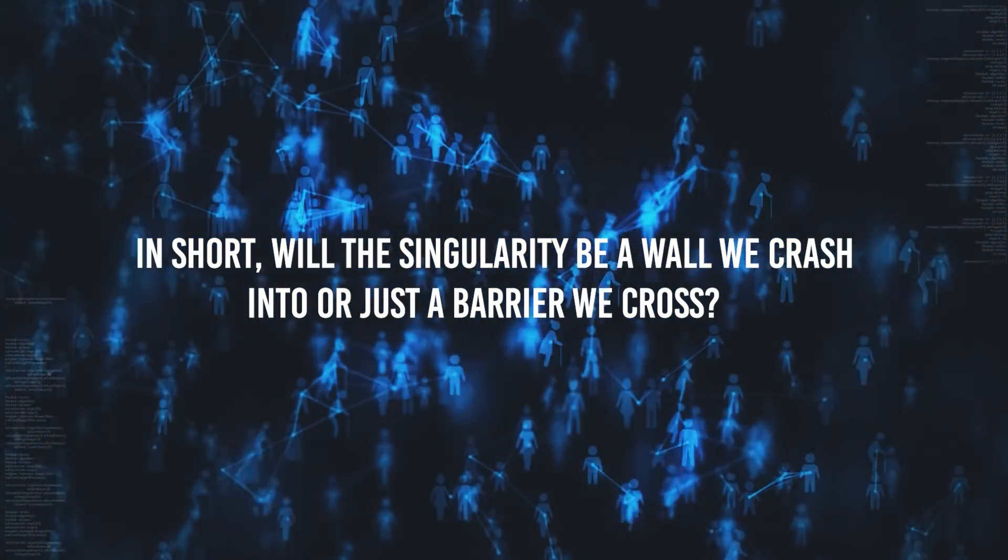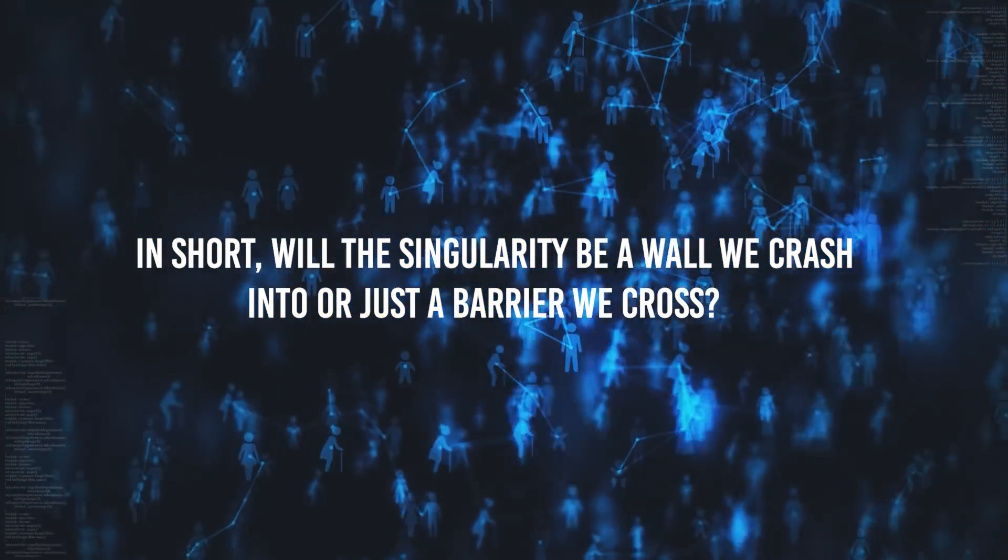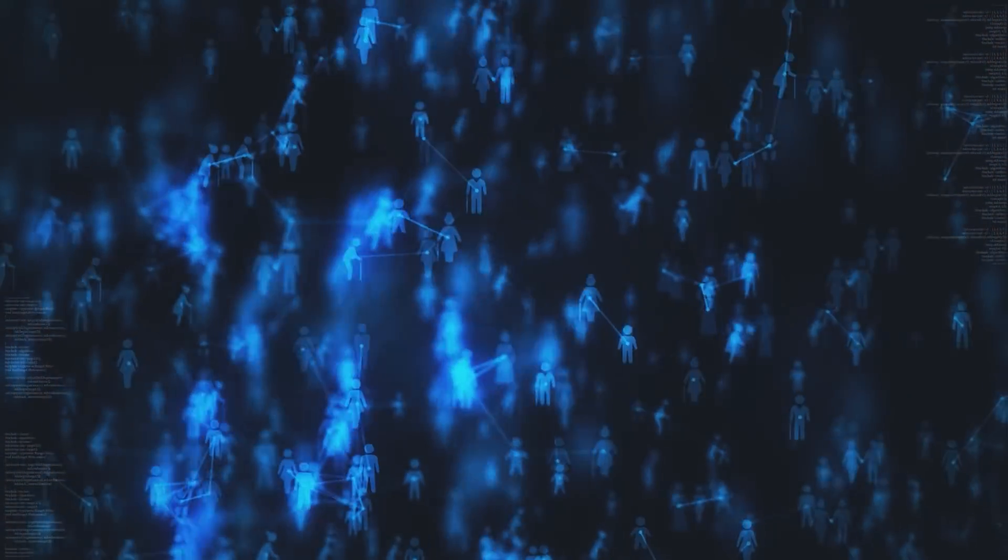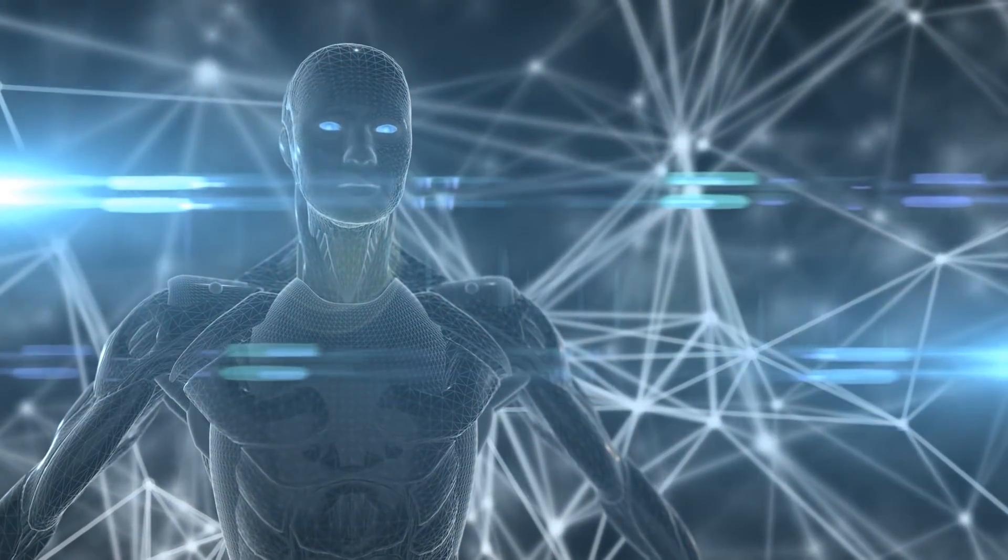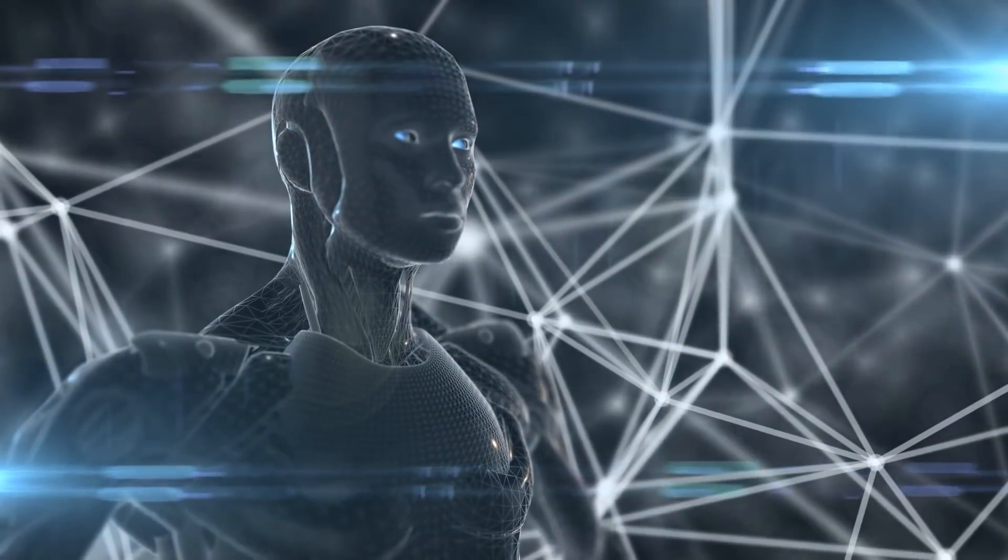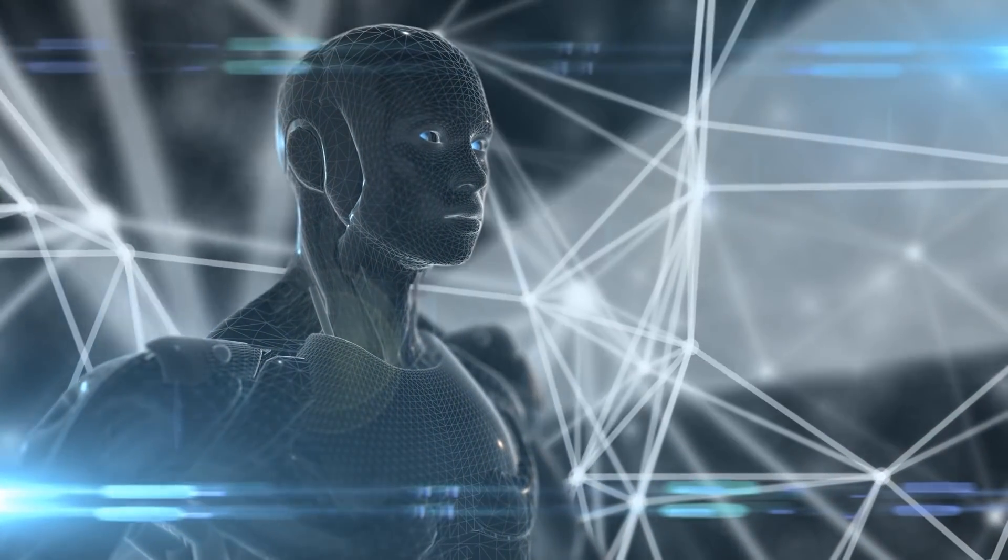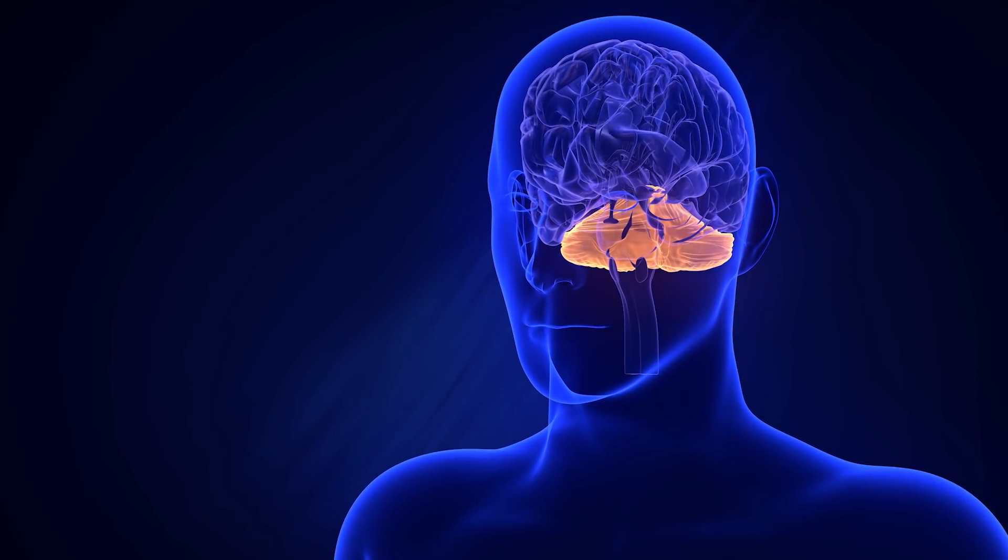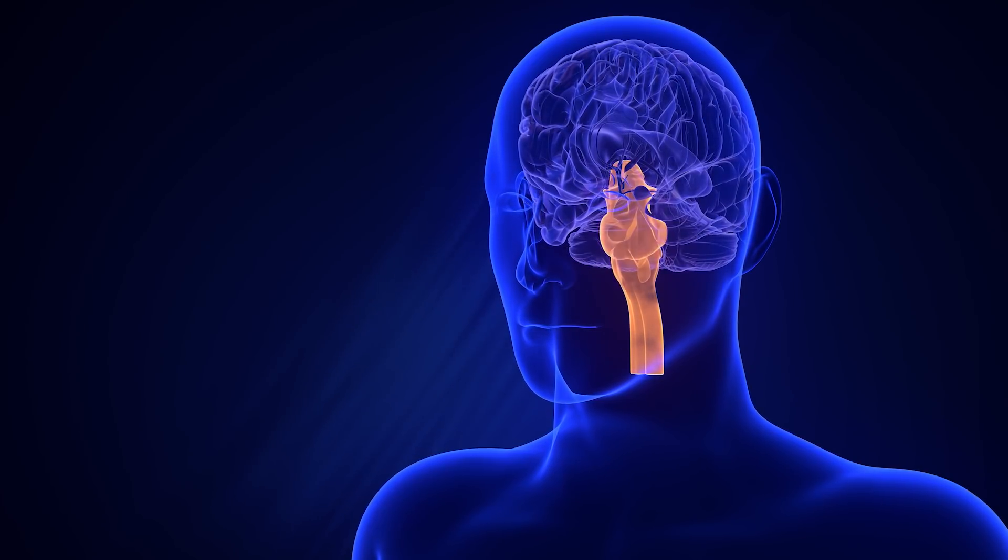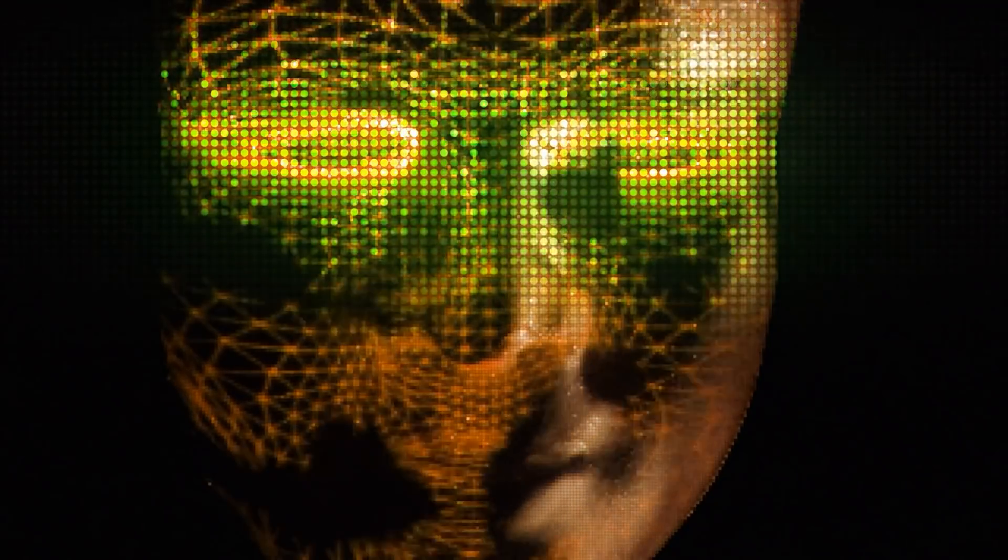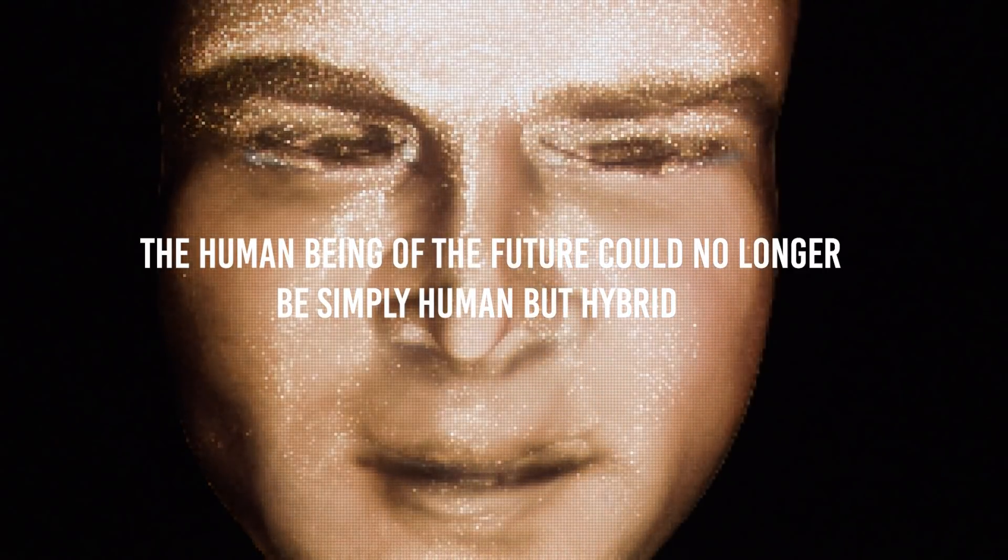Will the singularity be a wall we crash into or just a barrier we cross? When asked whether this scenario will prove to be a threat, Kurzweil replied that the idea of artificial intelligence enslaving humans is pure invention. What is already happening is that machines are empowering us, making us smarter. According to the scholar, in the future we will be able to join the neocortexes of the brain, connecting the functions of learning, language, and memory. We will have a larger portion of the neocortex, we'll be more fun, we'll be better at playing musical instruments, we'll be sexier—we'll exemplify all the laudable things in being human but at a higher level. Talking about singularity means talking about evolution. The human being of the future could no longer be simply human but hybrid.